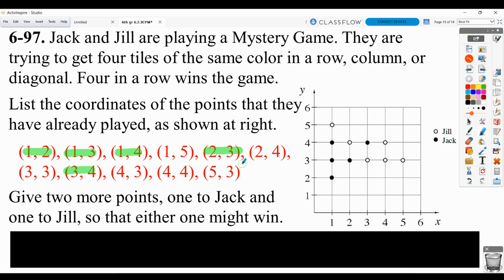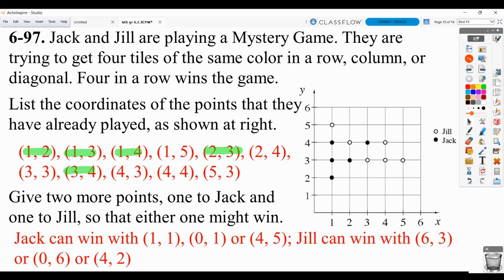Then they want you to give two more points, one to Jack and one to Jill, so that they could win. So Jack could win if he had a point at 1, 1 here. And then 0, 1 would also allow him to get a win. Or 4, 5 would give him a diagonal. So he could have it here for the diagonal, here for the diagonal, or here for the up and down.